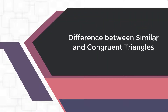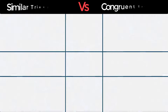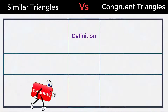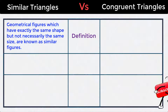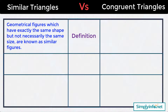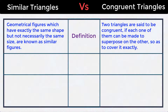Difference between similar and congruent triangles. Definition of similar triangles: geometrical figures which have exactly the same shape but not necessarily the same size are known as similar figures.